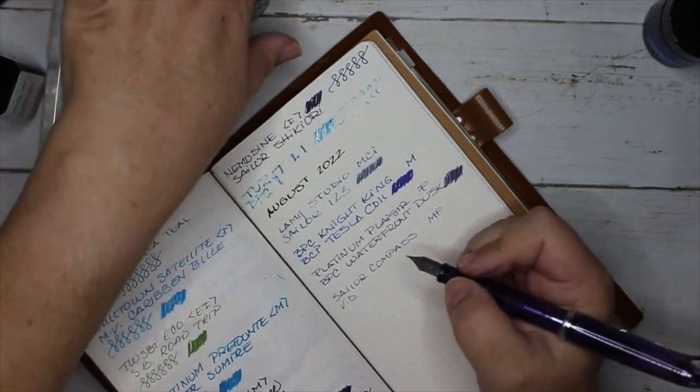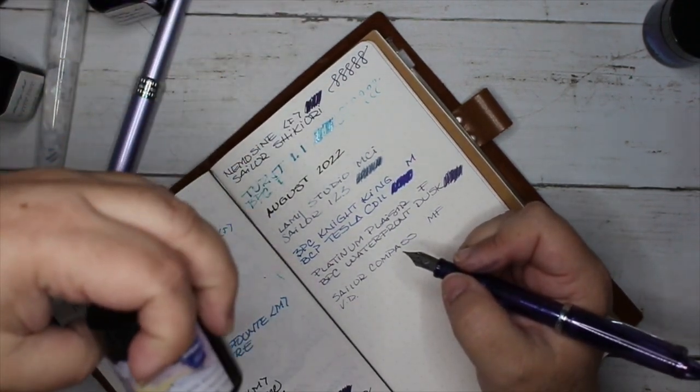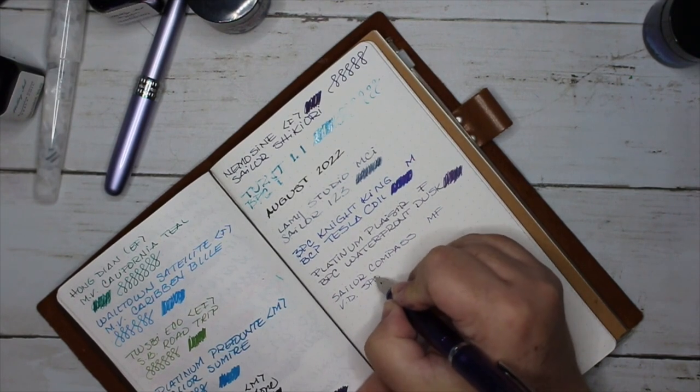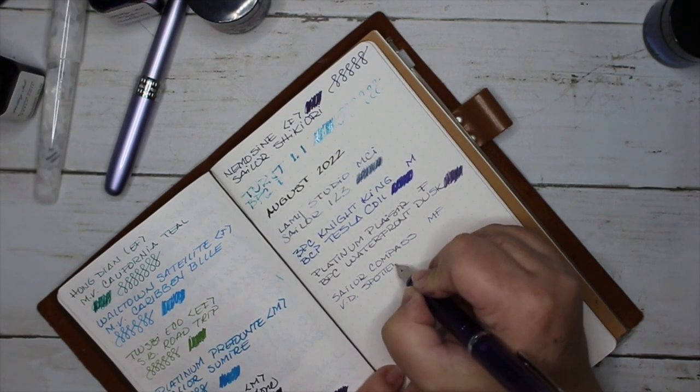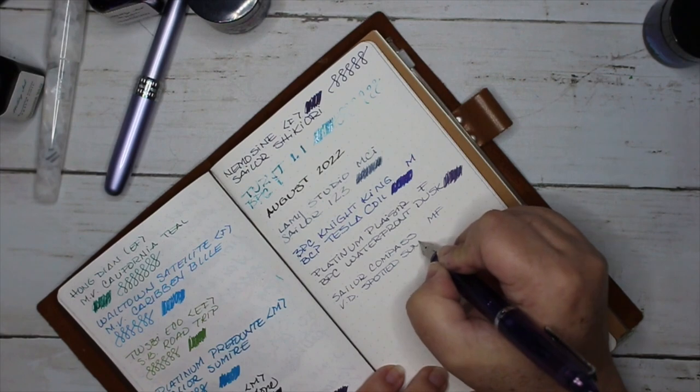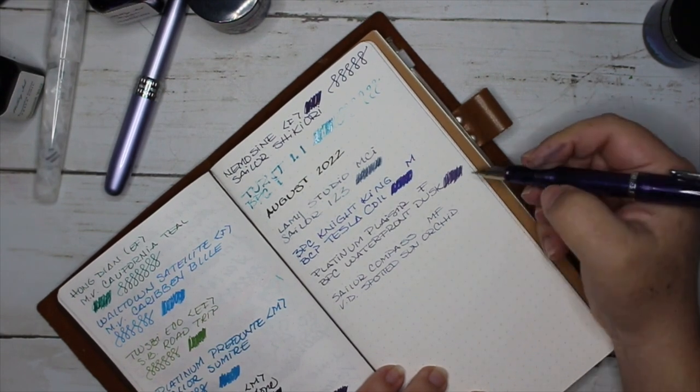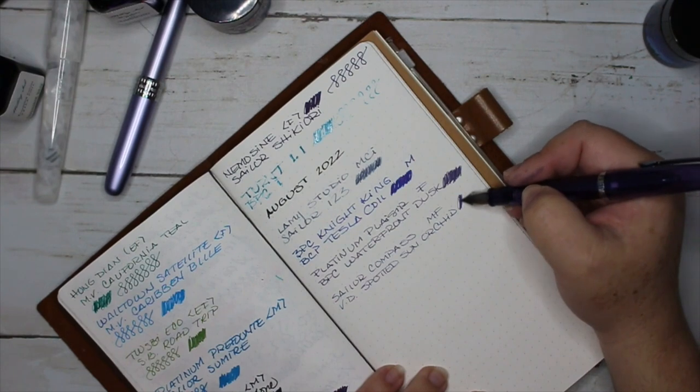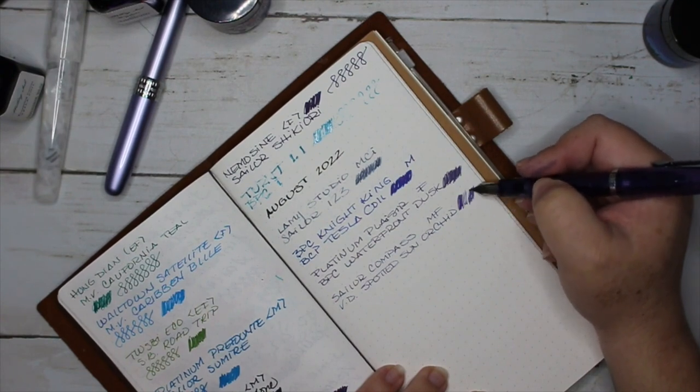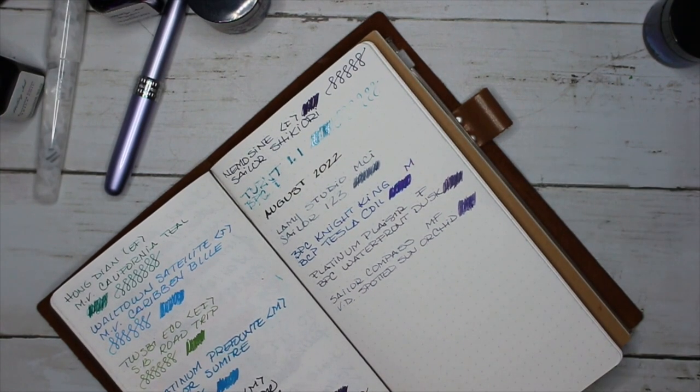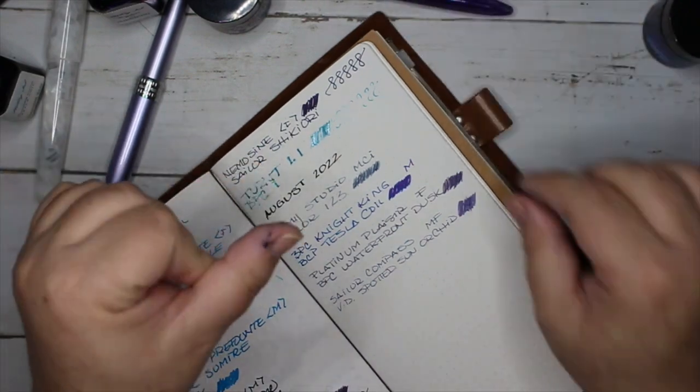It's still scratchy. Van Dieman's Spotted Sun. I always do that. I don't hate it, but it's not my favorite pen, which is probably why it's still around.